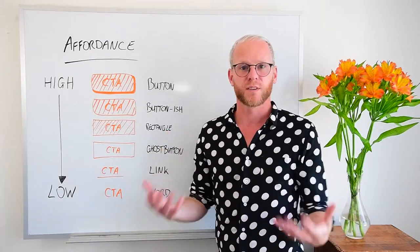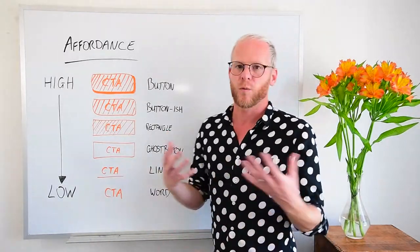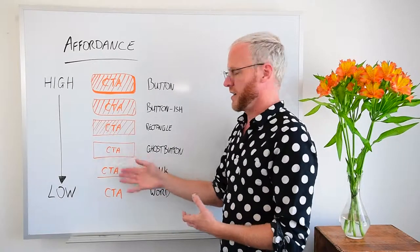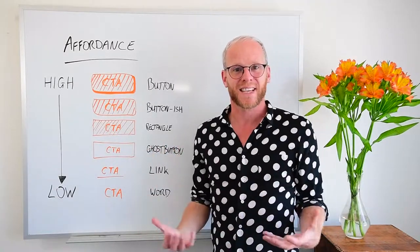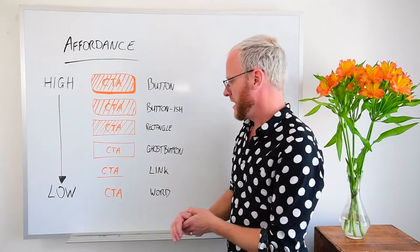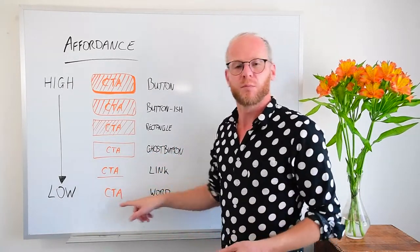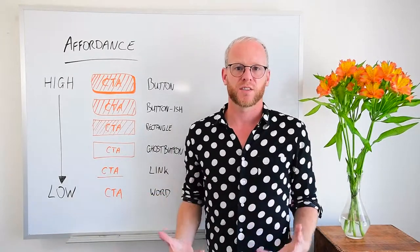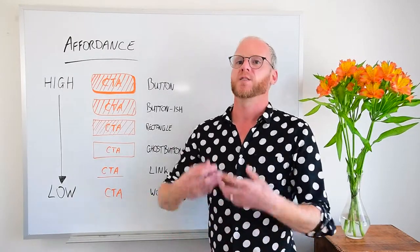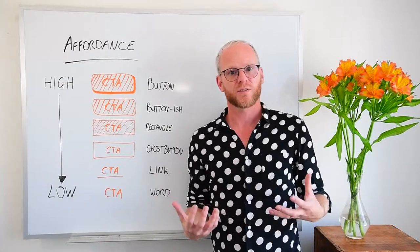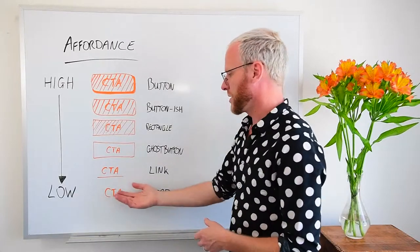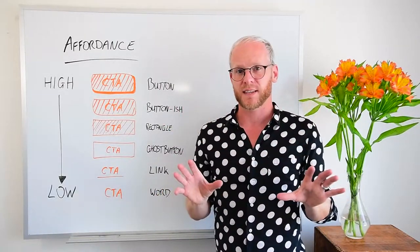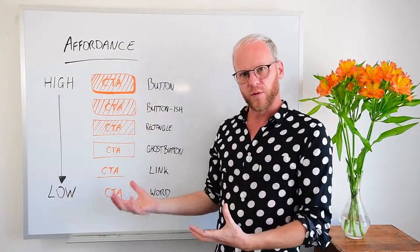From years of using the web, we're familiar that an underlined word is a link. So that, as far as text is concerned, has pretty high affordance. But if you remove the underline, it's essentially just a word, and you have to use color — again it's contrast — in order to make it stand out as being different from the rest of the text. So those are the levels of affordance.